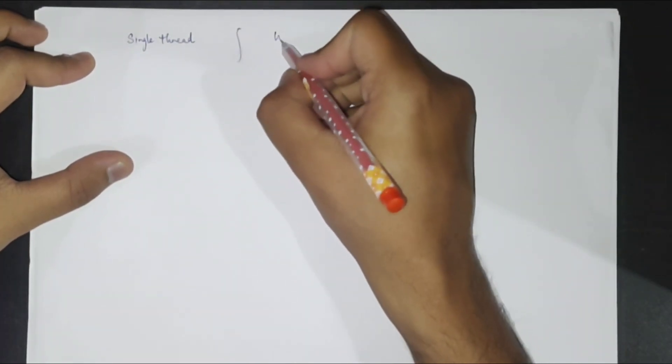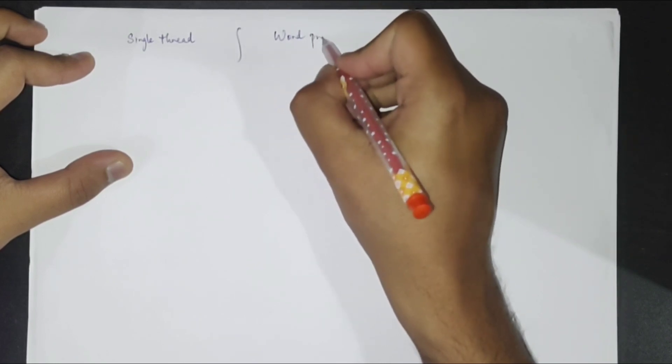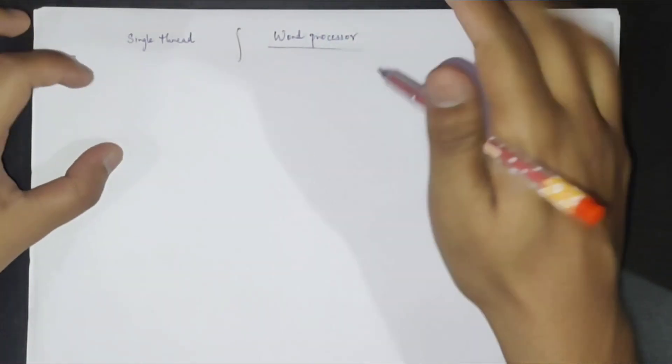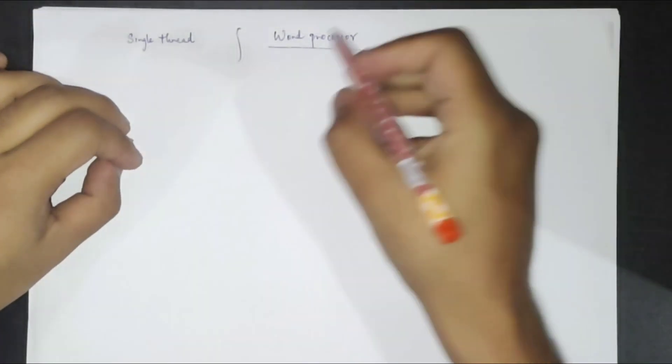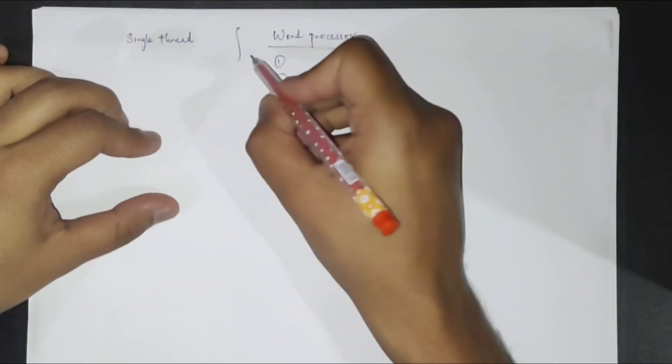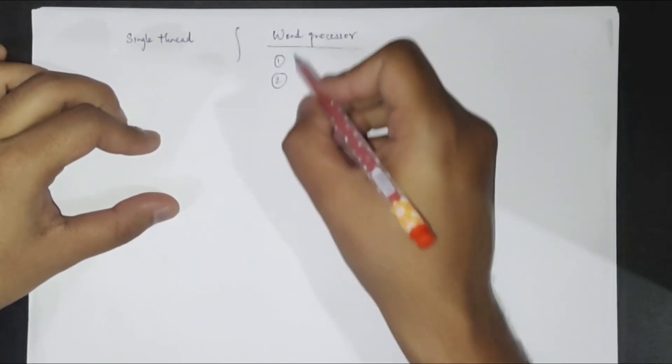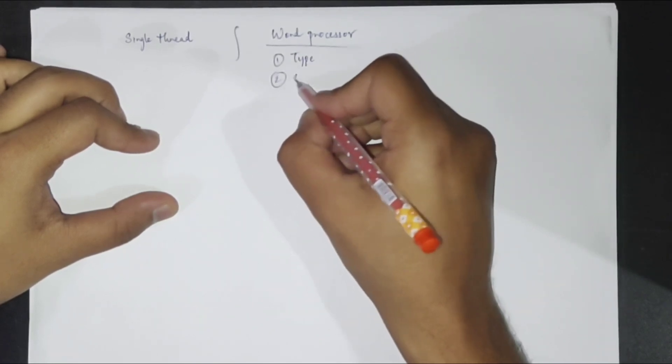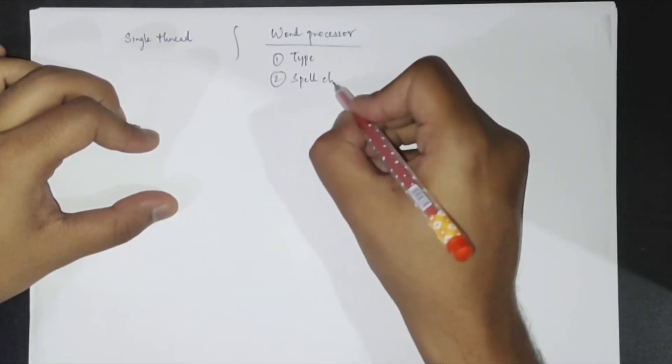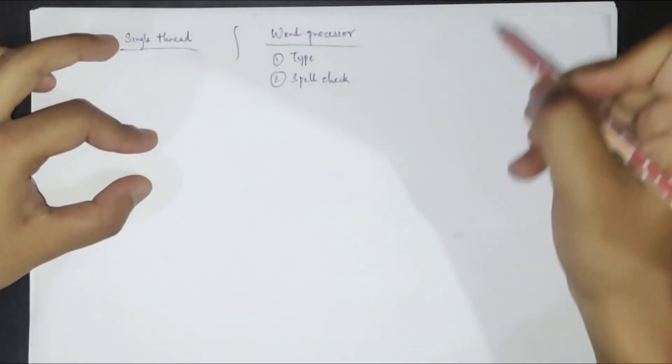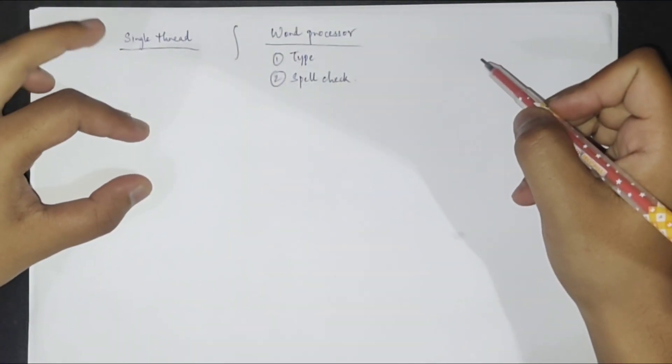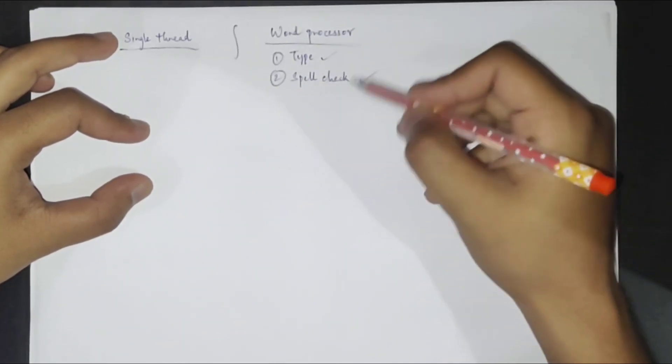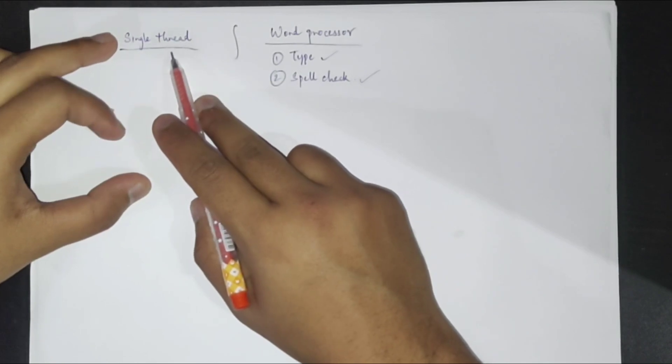Now if we just consider for example the word processor program. If you have a word processor program, what this will allow you to do is basically type in some characters. So for now to keep it simple, we'll just say that this can type in characters and we can also perform some spell check on whatever we have typed. Now if a process is performing single thread execution, then it can either type or do spell check. It cannot do both simultaneously because there is only one thread which is running.